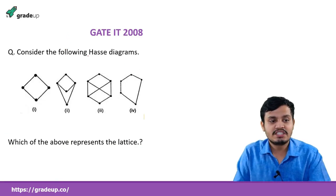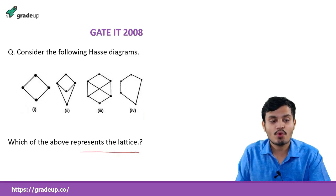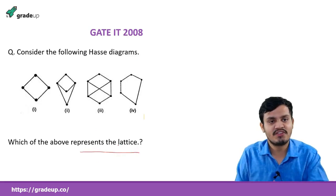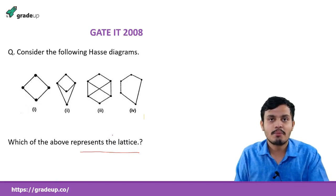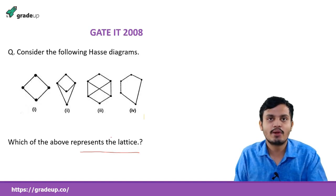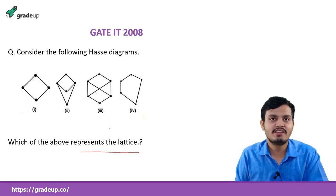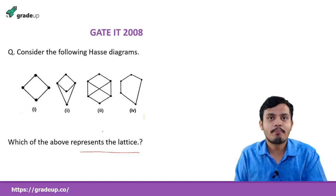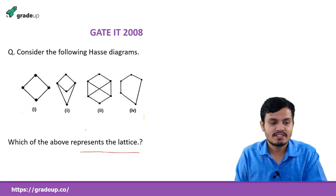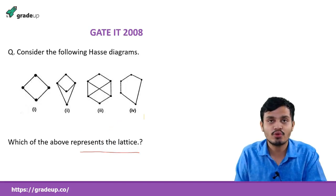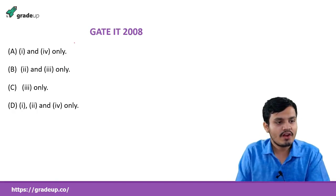Next question: consider the following Hasse diagrams — which of the above represent a lattice? Understand the question properly. If it says 'which is NOT a lattice' you have to do it differently — some people make that silly mistake. Try to minimize such mistakes by practicing a lot and reading the question properly. It is asking for the lattice. There are four options and we need to identify which among them is a lattice.